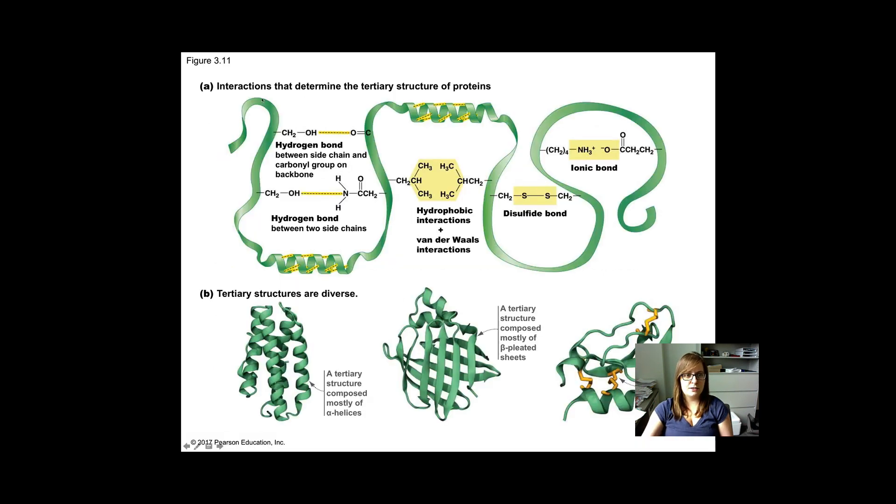We've already shown this figure in a different video but you can see here we have secondary structure depicted up here as alpha helices and down here. But then you also have those R groups participating in hydrogen bonds, hydrophobic interactions, disulfide bonds, and ionic bonds.